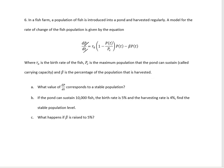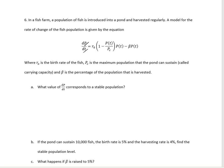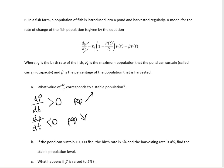What value of the derivative corresponds to a stable population? If the derivative is positive, the population is increasing; if negative, it's decreasing. So a stable population requires the derivative to equal zero — meaning we're harvesting fish as fast as they're giving birth, so every fish taken out is replaced by a new one.